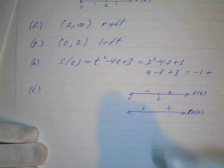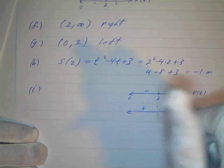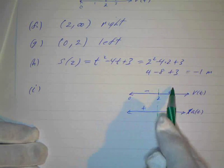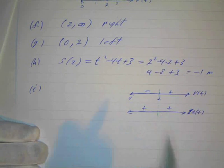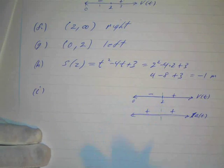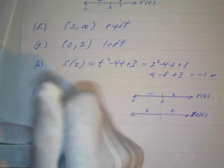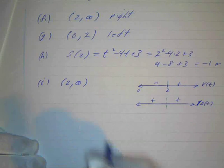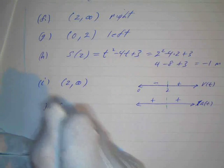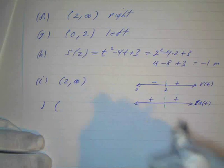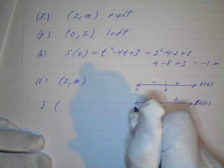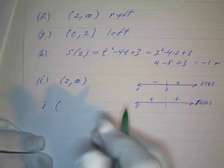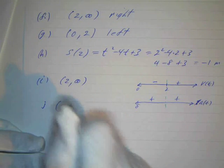With a boundary mark at t equals 2: before t equals 2, velocity and acceleration have different signs, so speed is decreasing. After t equals 2, they have the same sign, so speed is increasing. Letter I: speed is increasing when velocity and acceleration have the same sign, so from 2 to infinity. Letter J: speed is decreasing when they have opposite signs, so from 0 to 2.